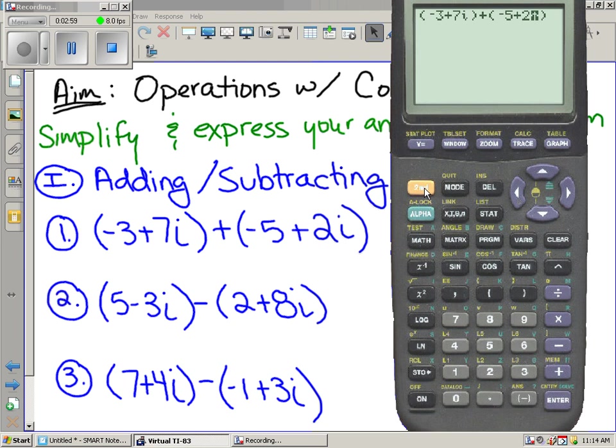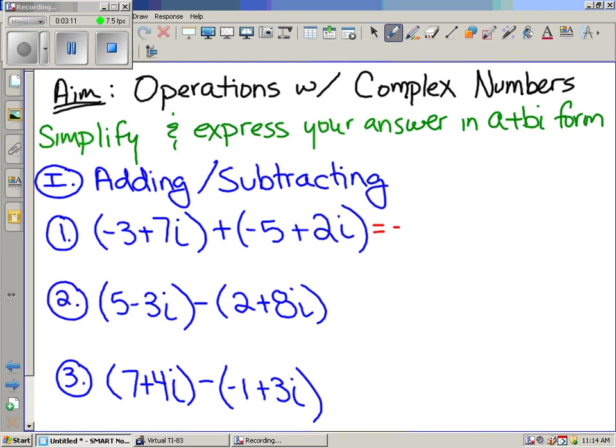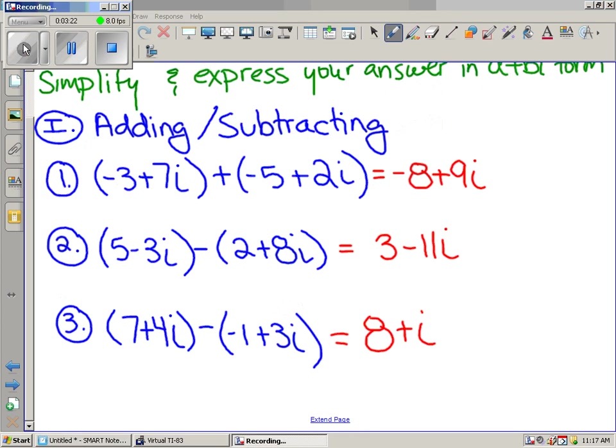So, is that the question being asked? Check it out. Your calculator also puts things in A plus B I form. Beautiful, right? So, that's the answer to number one. Negative eight plus nine I. Do me a favor. Do the rest using your calculator. Let's see if we all get the same answers.